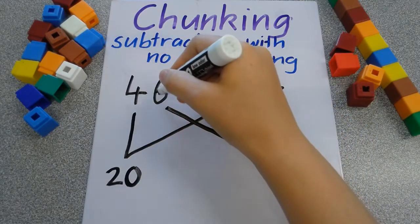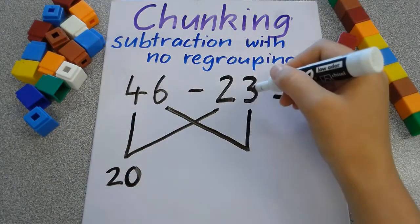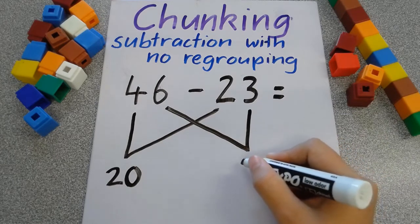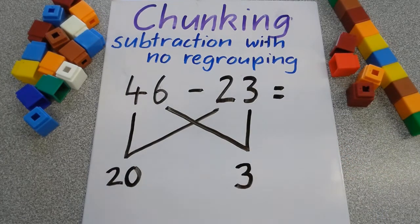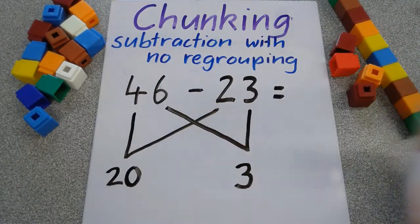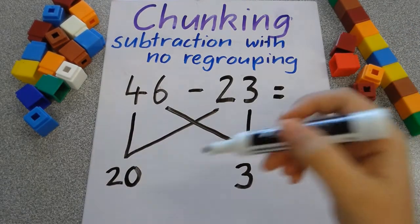6 take away 3 equals 3, and I know that straight away because I know my doubles facts and I know that 3 plus 3 equals 6. So now that we've got to this step, this is the part that's a little bit different to addition. I don't take away these numbers.